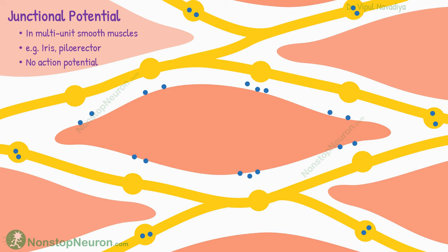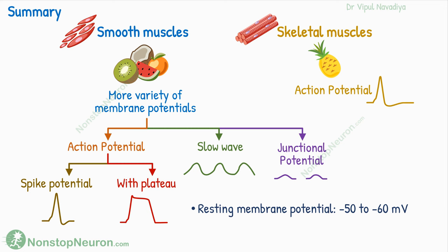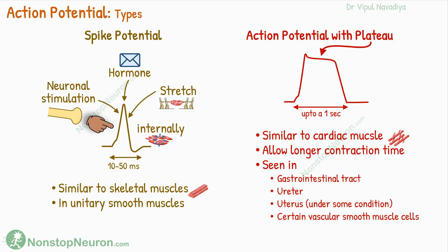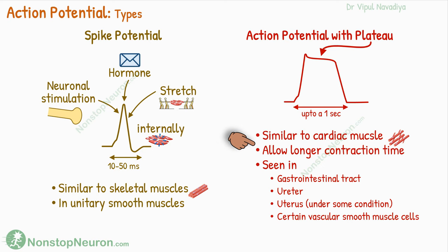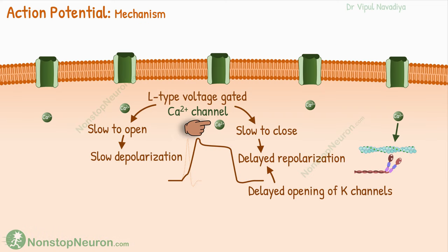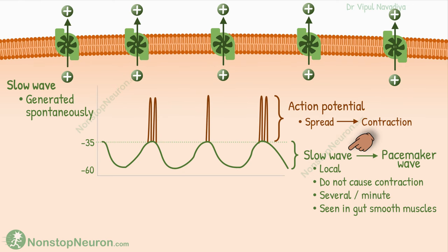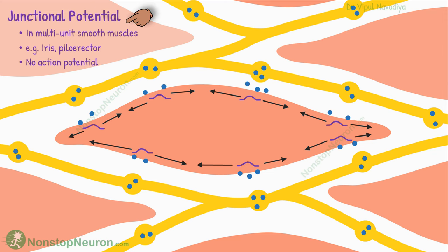So these were all the types of membrane potentials seen in smooth muscles. Let's have a quick summary. Spike potentials are similar to those seen in skeletal muscles and they occur in most unitary smooth muscles. Action potential with plateau allows prolonged contraction in the gastrointestinal tract, ureter, uterus, etc. Calcium ions are mainly responsible for action potential in smooth muscles. Slow wave potentials are rhythmic oscillations in the membrane potential; they do not spread themselves or cause contraction, but they elicit action potentials repetitively, which causes rhythmic contraction of muscles as seen in the gut. Finally, junctional potential is seen in small multi-unit smooth muscle fibers, like those in the iris and piloerector muscles, where local depolarizations cause muscle contraction without action potential.